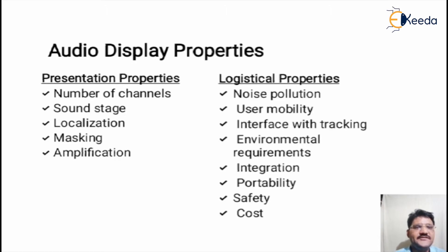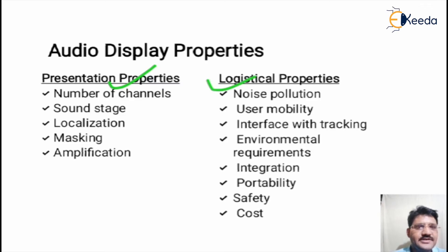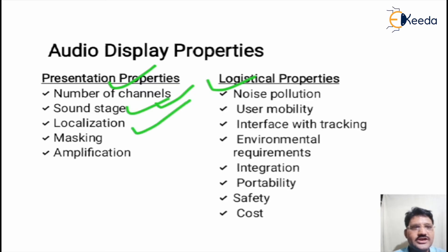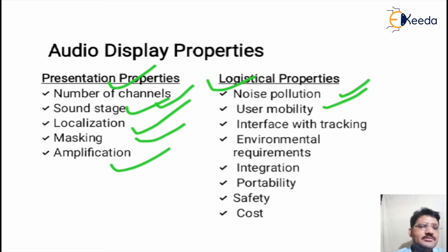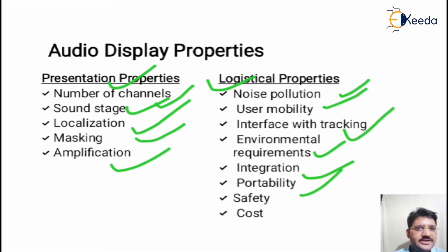There are a few properties which must be satisfied by audio display devices, categorized into two terms: presentation and logistical. Presentation properties include number of channels, stage of sound, localization, masking, and amplification. Logistical properties include noise pollution, mobility of the user, interface with tracking, environmental requirements, integration, portability, safety, and cost.